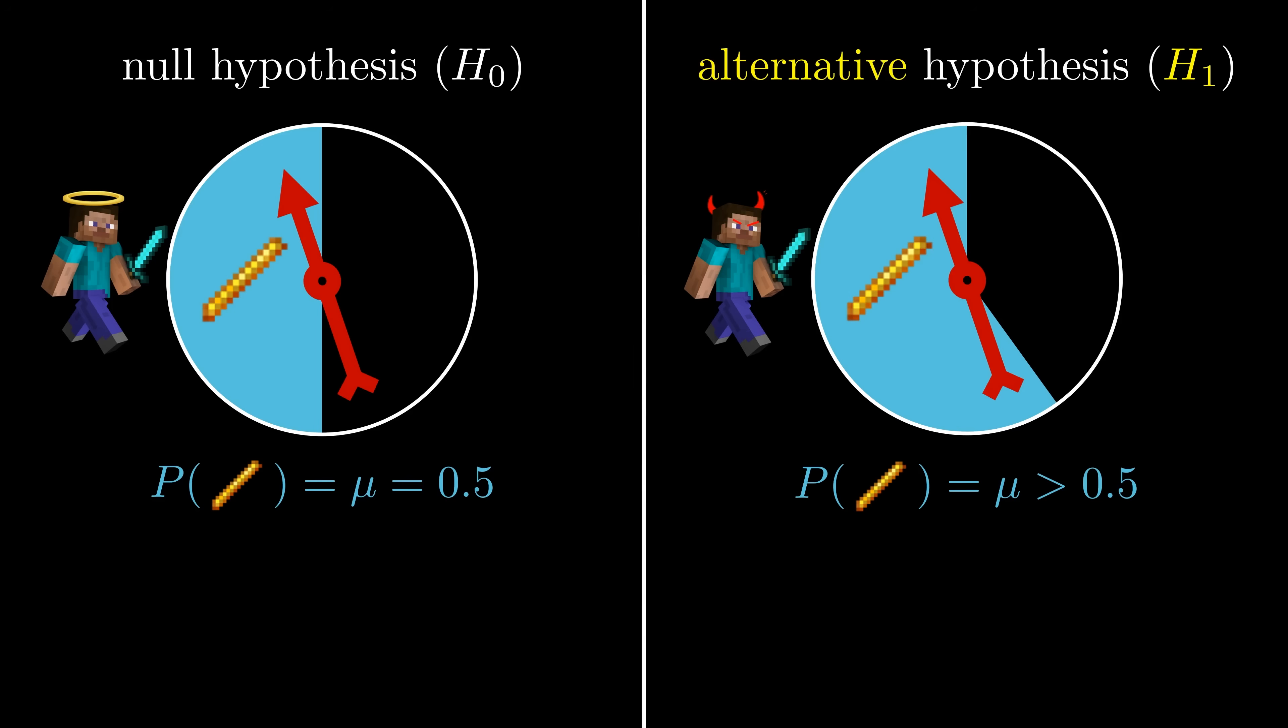Notice how in the world where our friend cheated, the alternative hypothesis, we don't specify exactly how they cheated. We don't know, for instance, whether they modified the probability mu to be 60%, 70%, or say 85%.